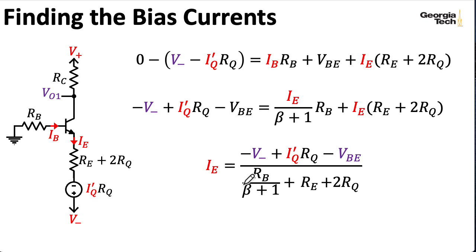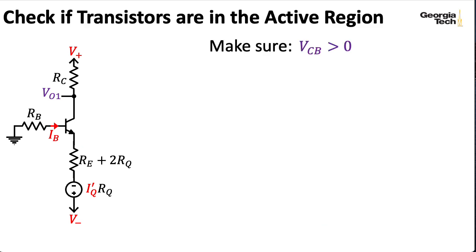And once you have the emitter current, you can multiply by alpha to get the collector current, and divide by beta plus 1 to get the base current. The collector current is handy for making sure we're in the active region. So we need to check to make sure that the voltage at the collector is bigger than the voltage at the base.